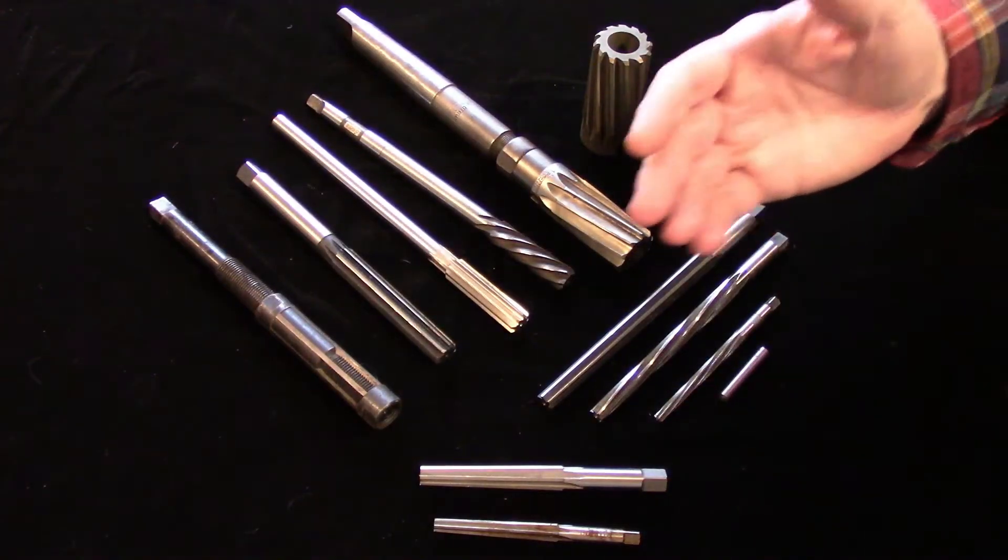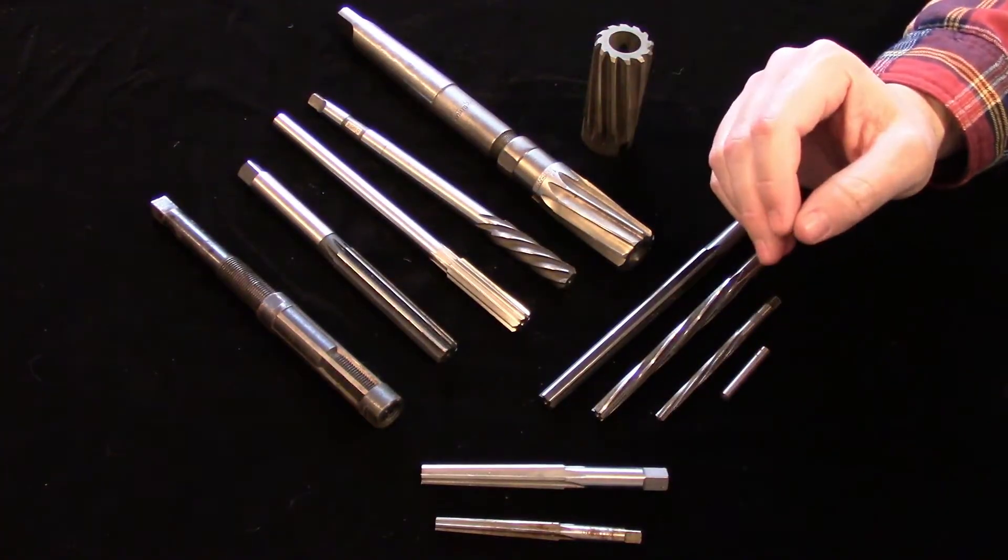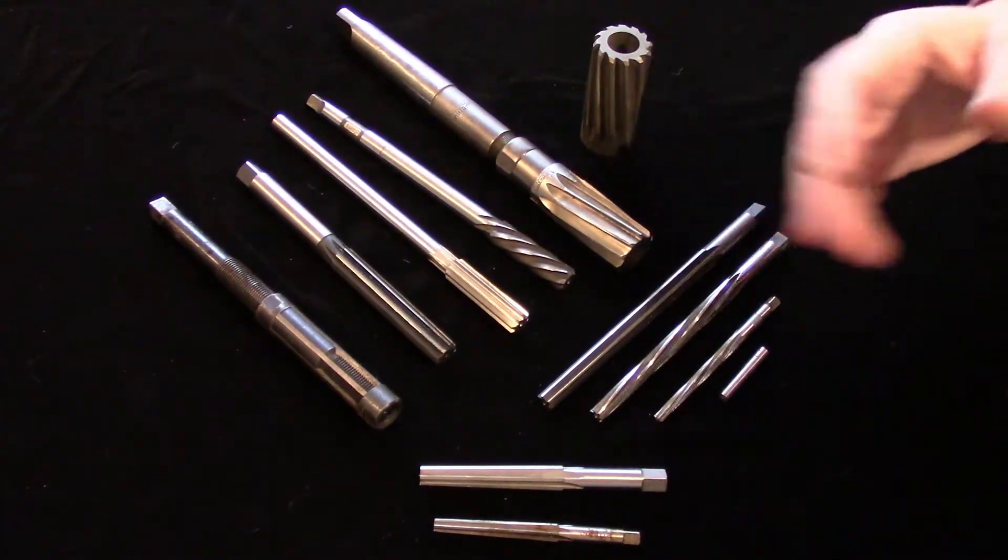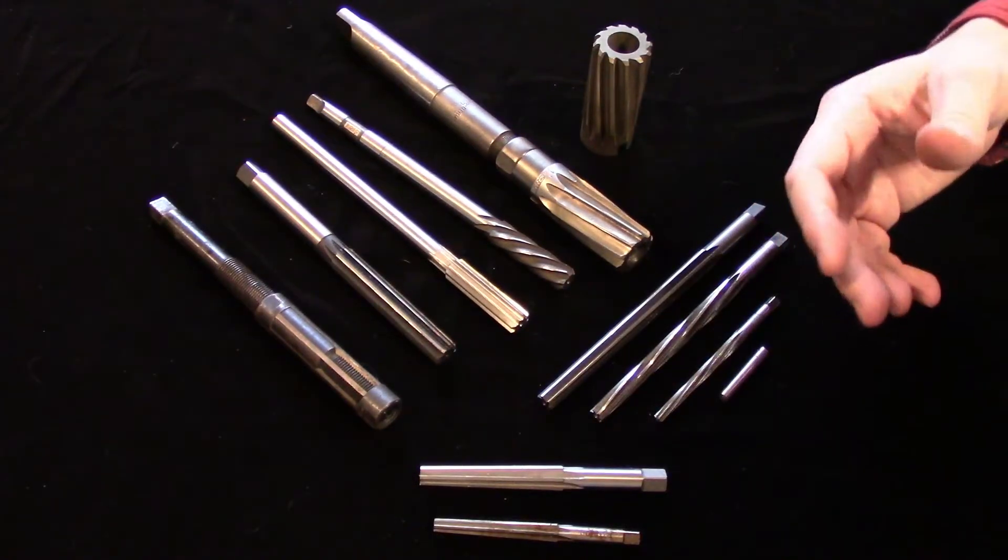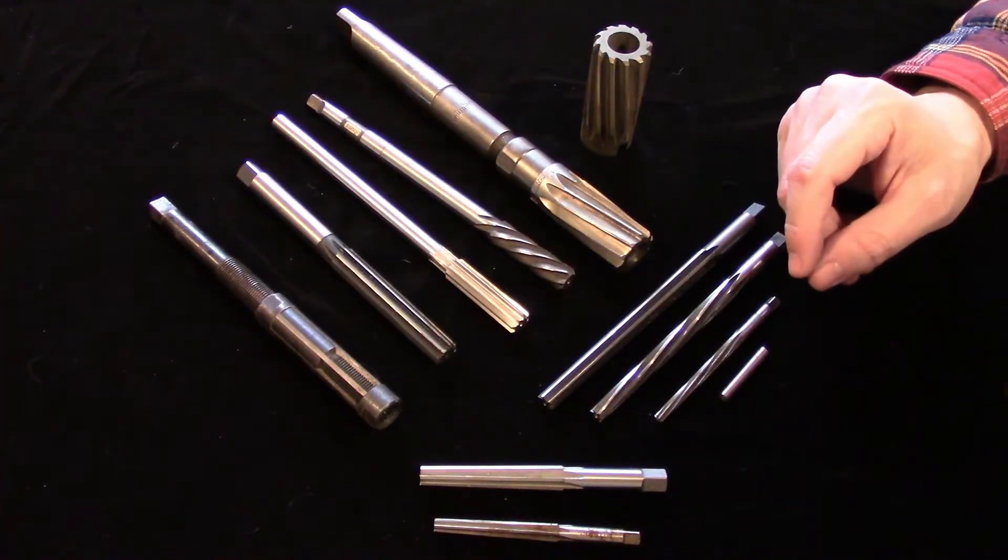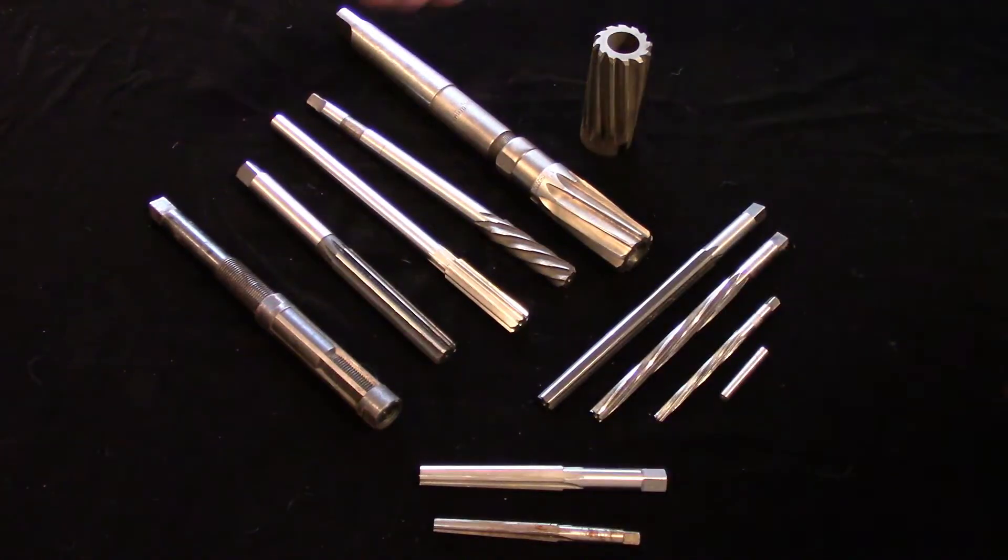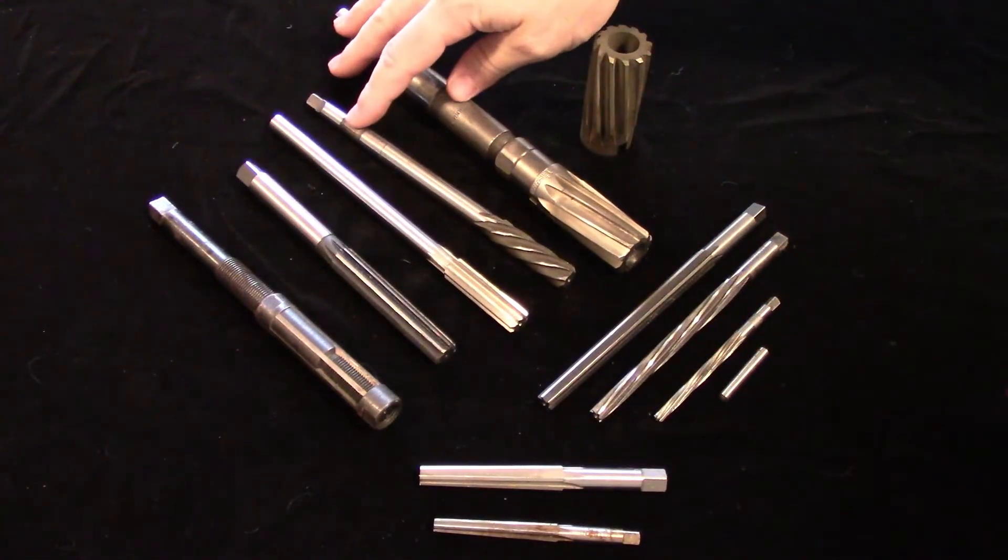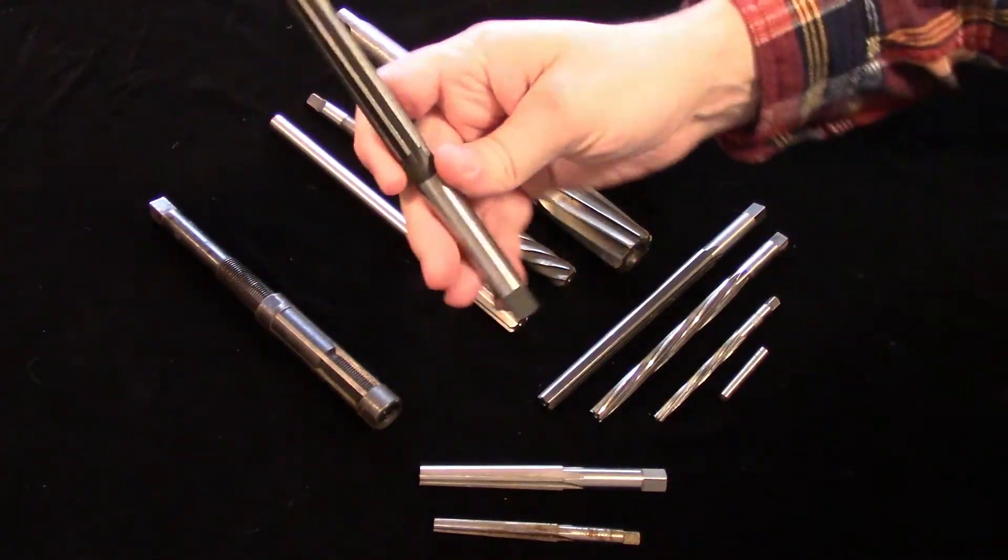Just like twist drills, reamers come in a wide array of styles, materials, and shank types. Many of these are the same options you would have with drills. They are available in high-speed steel and carbide, as well as carbide-tipped so you get the hardness of carbide on the leading edge and the flexibility of a high-speed steel shank. They also have both straight and taper shanks like drills. But additionally, there is a variety with a square shank like a tap.